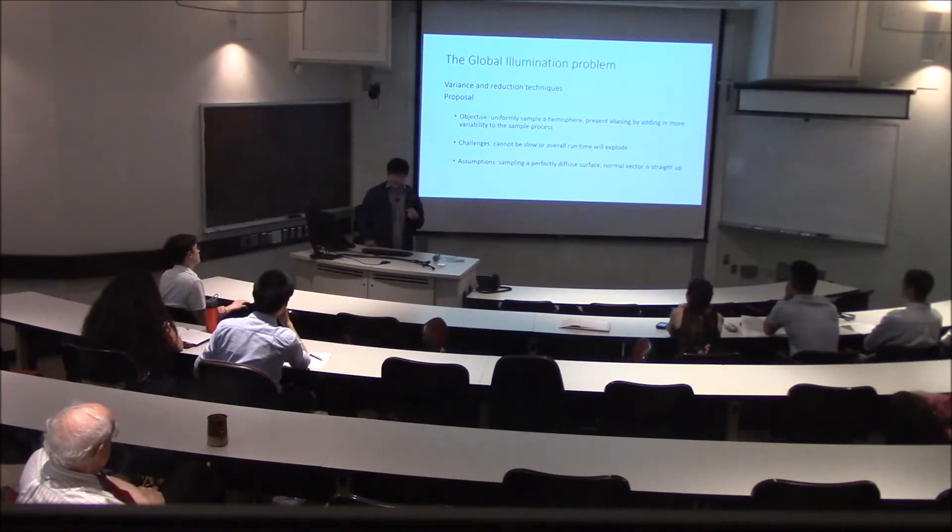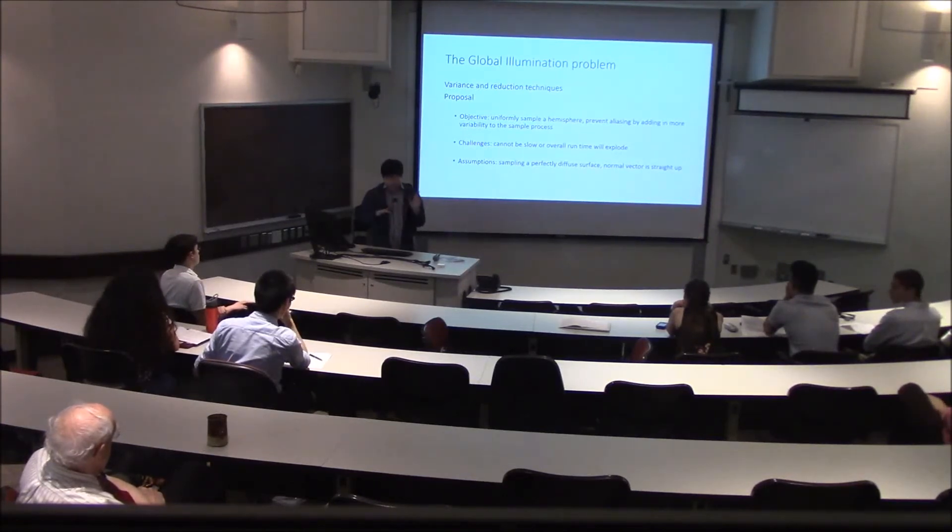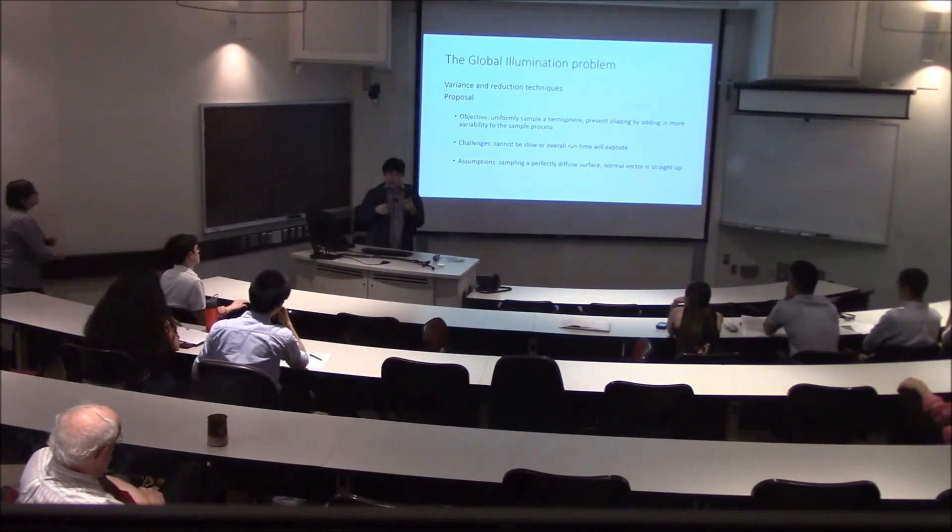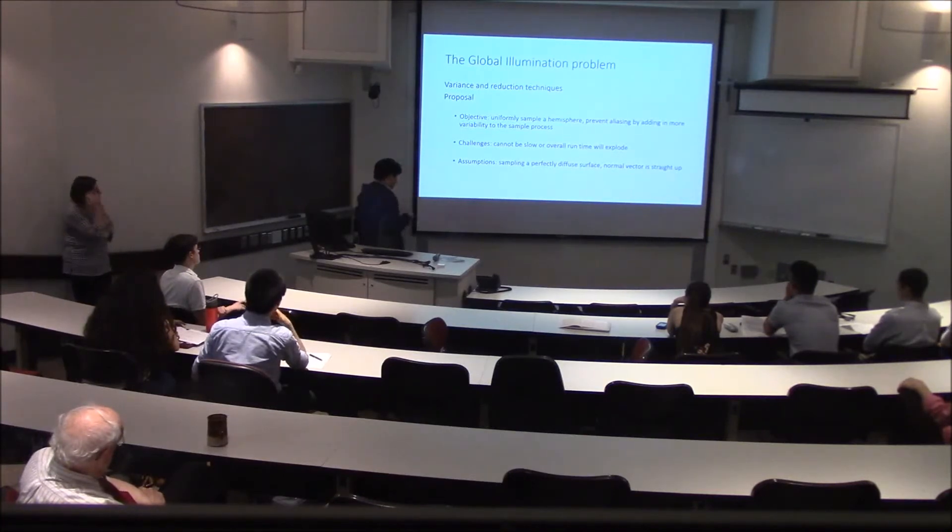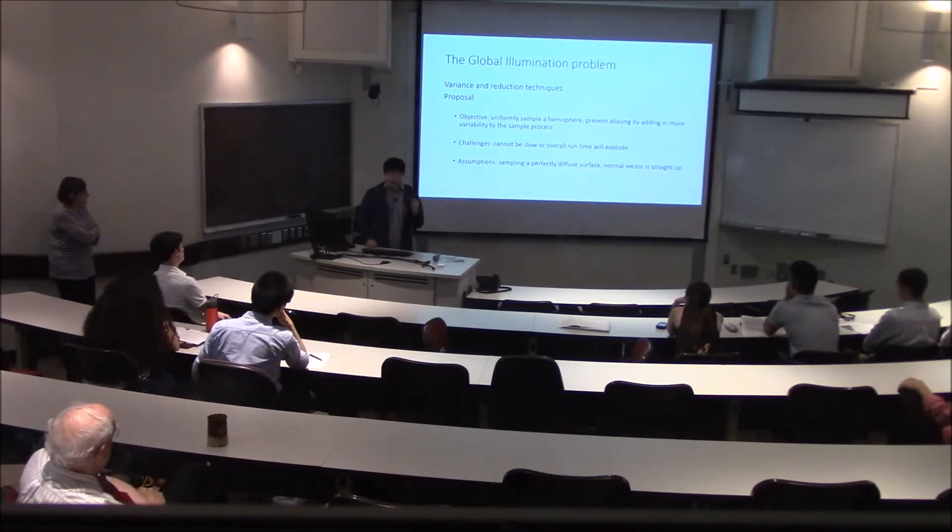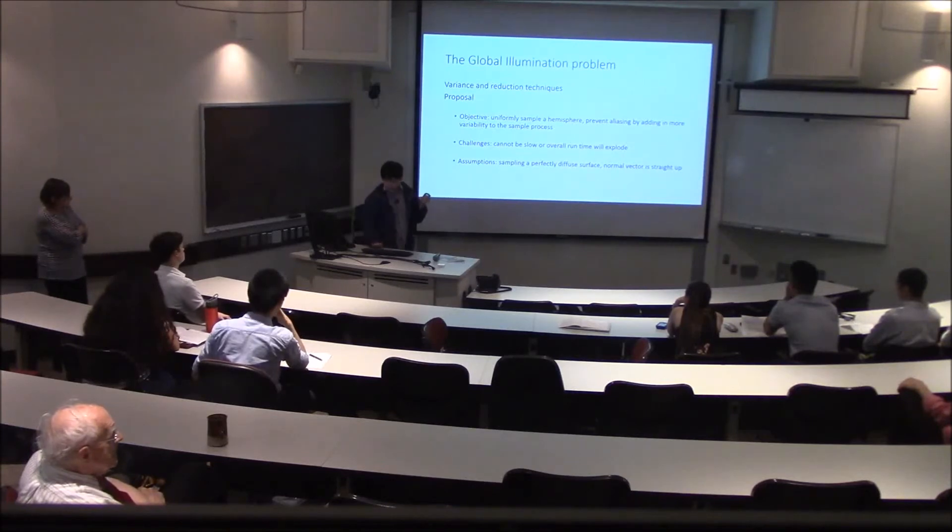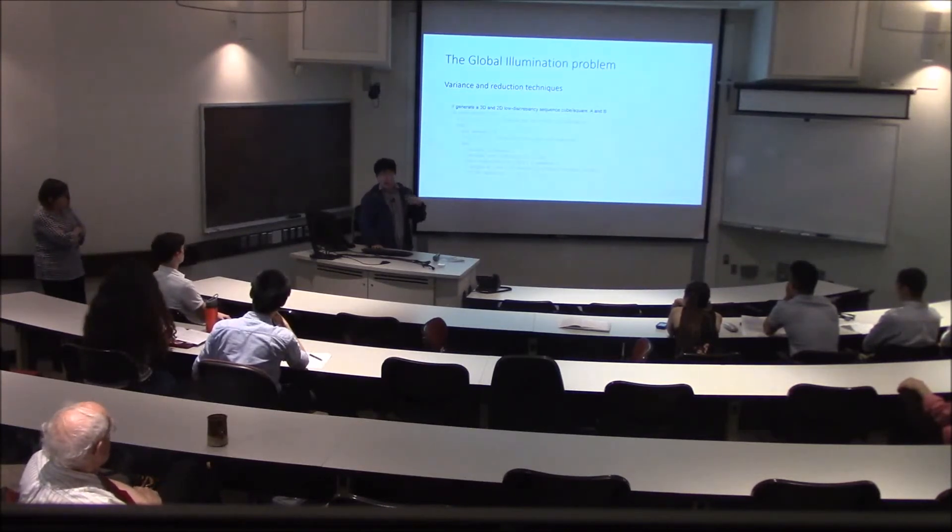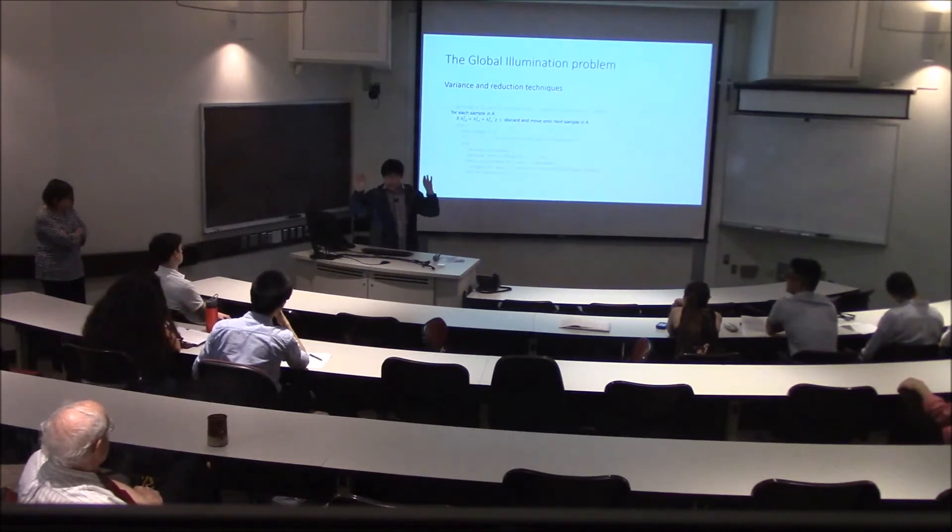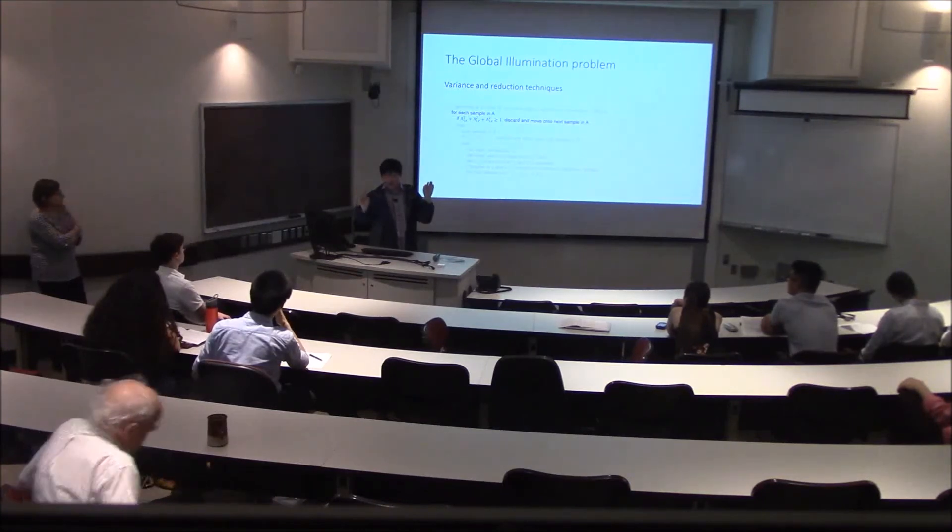This is a proof of concept of what I had in mind. We're assuming that we want to calculate the light at a perfectly diffused surface, which means we want to sample the hemisphere uniformly. Regular quasi Monte Carlo methods could bring in some aliasing, so we want to add in some variance. Some of the challenges we face is that we have to be very meticulous with the number of computations because these will be done millions if not billions of times. We want to generate a 3D and 2D low discrepancy sequence, call this a and b. Then for each sample in a, we discard all the ones outside of the sphere, and we do this for b as well.